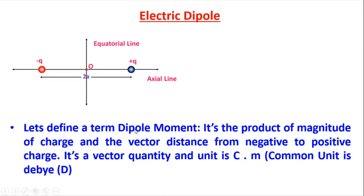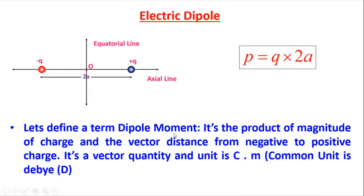Next, let's define another term: dipole moment. The dipole moment is the product of the magnitude of the charge and the vector distance between the negative and positive charge. It is a vector quantity, and the unit is coulomb into meter. So dipole moment p equals the charge q multiplied by the vector distance 2a, i.e., p = q × 2a.